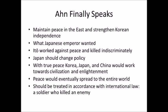Ahn also wanted to emphasize that he was not anti-Japanese. He saw the Japanese emperor as someone who supported peace in the east and who wanted to strengthen Korean independence — after all, that's what Japan's declaration in the Russo-Japanese War said. Japan had always claimed Korea's independence, going back to the Treaty of Ganghwa in 1876. From Ahn's perspective, the Japanese emperor wanted to maintain peace in the east and strengthen Korean independence, but Ito Hirobumi was not doing that — Ito was a bad official working against these goals.